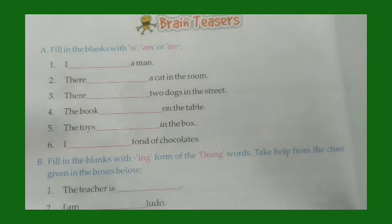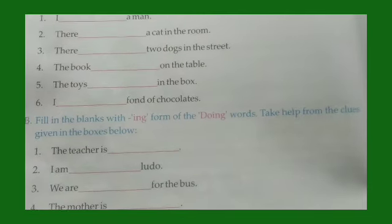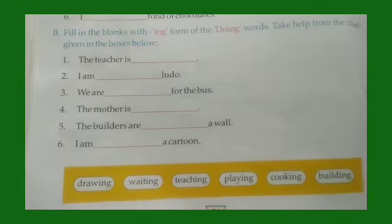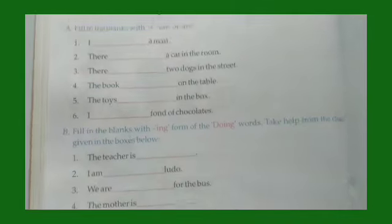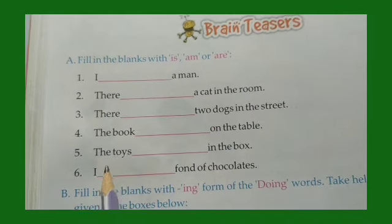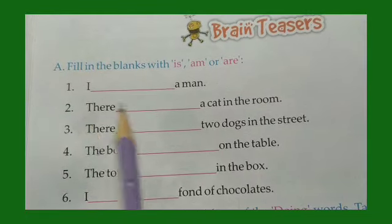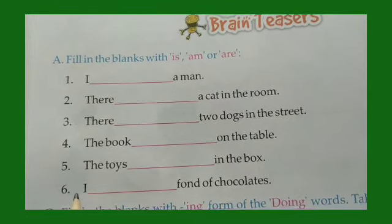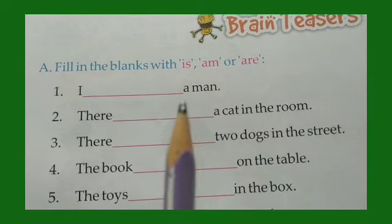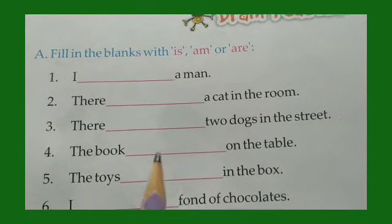So in the previous class, we learned when to use is, am and are. So children, your English grammar book, page 54. Page 54 brain teaser — this will be your homework. You know when to use is, am or are.